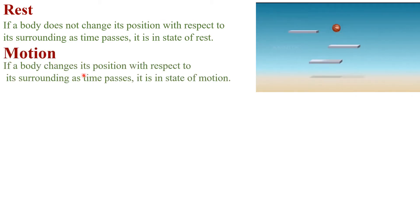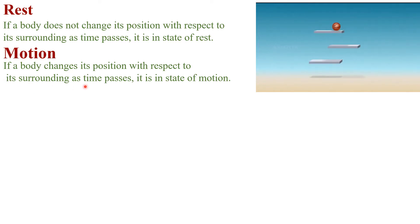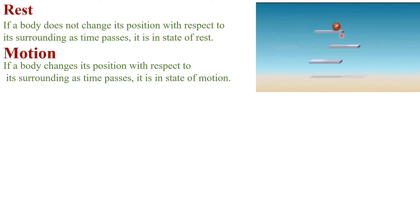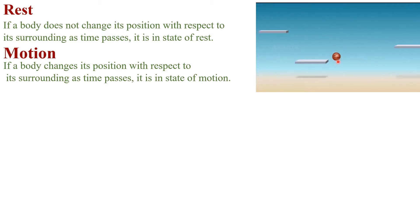Motion: if a body changes its position with respect to its surroundings as time passes, it is in a state of motion. We can see that this object changes its position with respect to time, so we call it a state of motion when it changes its position from one point to another point.